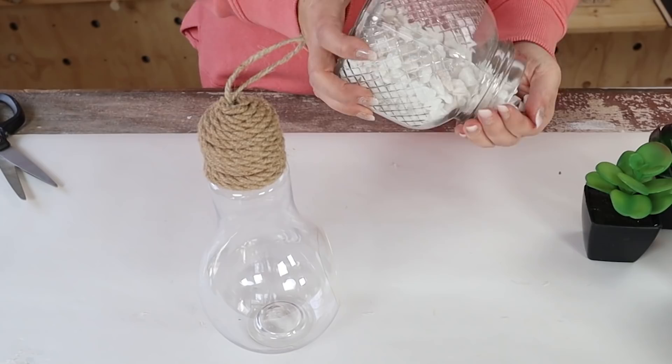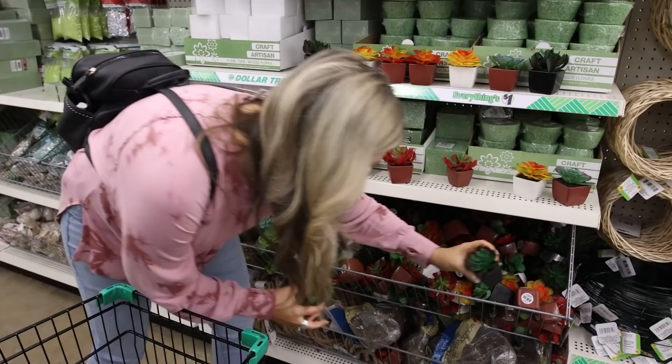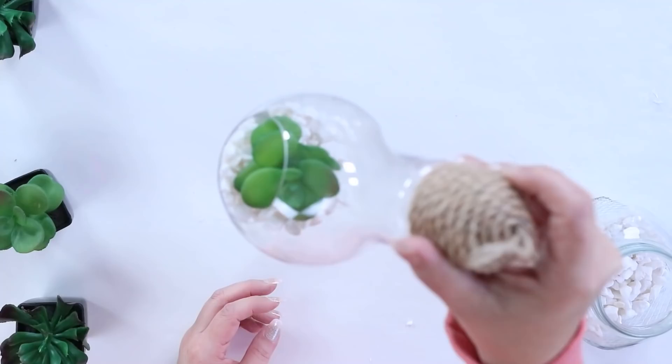Next, I decided to add some white rocks to the base of these. And then I also at Dollar Tree picked up some succulents. This is a great time of year to start buying them because this is when they put them out. And by spring, I feel like all of their succulents are gone. So I'm just going to pull them out of their bases and put them into the rocks.